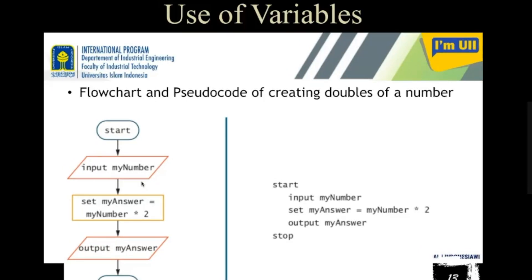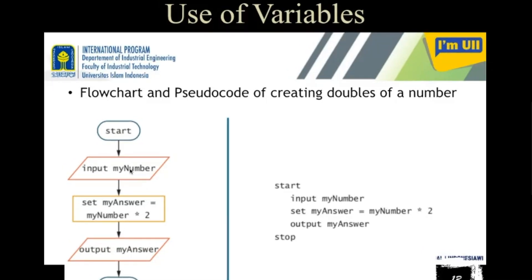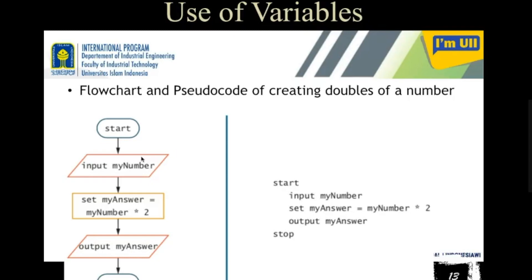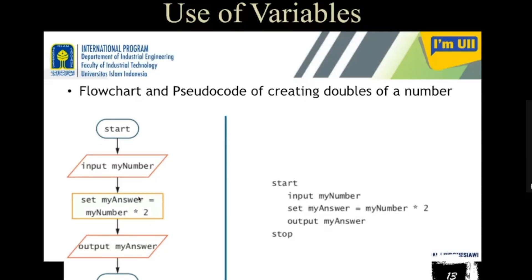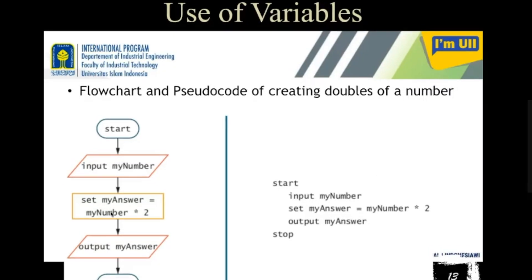Similarly, start and stop are also must in a pseudocode. The first step is to accept the number you want to double — that is an input statement. Then you generate the result as output. This symbol and this one represent input and output. The rectangular box is for processing — the number collected from the user is multiplied by two to create its double, which is stored in the output variable called 'my answer', and that variable is used to display the output.